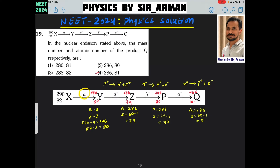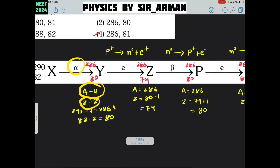When the alpha particle is coming out, the alpha particle is like a helium nucleus whose mass number is 4 and atomic number is 2. So the mass number decreases by 4 and the atomic number decreases by 2. The new mass number will be 290 minus 4, which becomes 286, and the new atomic number will be 82 minus 2, which is 80.